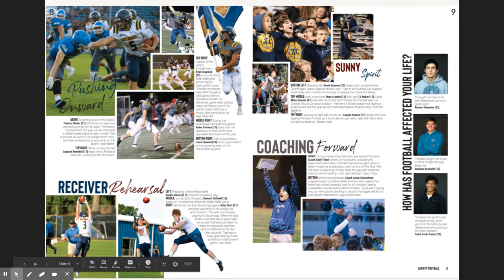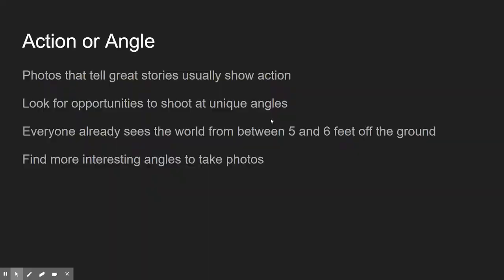We always want to show the face and always want to show the ball. If you can't see the face or it's hidden, don't use the photo. Photos that tell great stories usually show action. We can't always show action because there's not always something going on — sometimes kids are just sitting and doing something. So when we can't show action, we at least want to shoot from an interesting angle. Everyone already sees the world from about five to six feet off the ground, so if we show things from that same perspective, we're showing them something already seen.